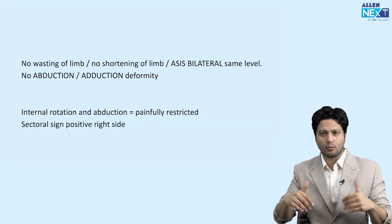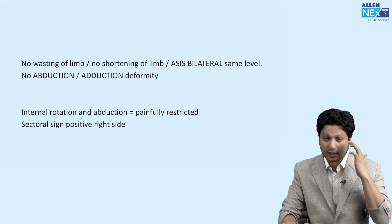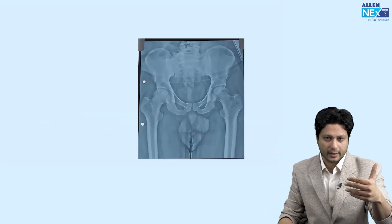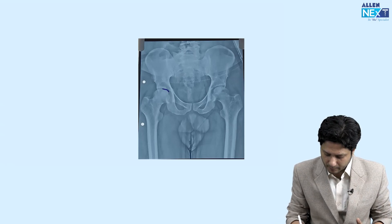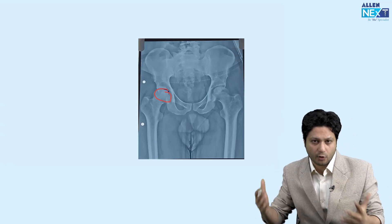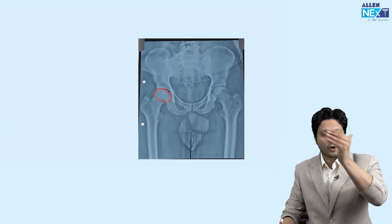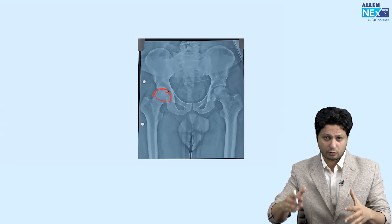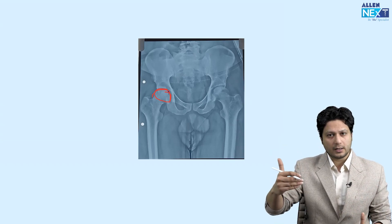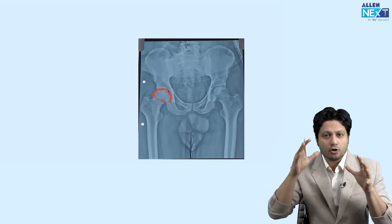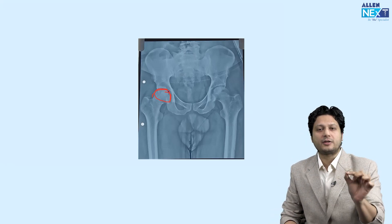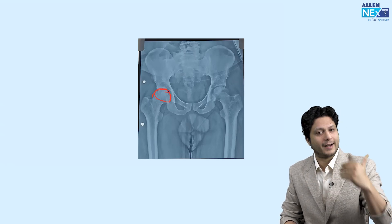This led us to the conclusion that we should go for an X-ray of the pelvis including both hips. On X-ray, we found relative sclerosis present in the head of the femur. Although the joint space was relatively normal and the sphericity of the femoral head was absolutely normal, it gave us an impression to proceed with more sophisticated investigation for possible osteonecrosis of the head of the femur.